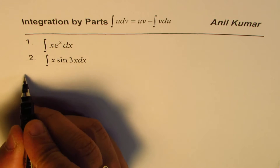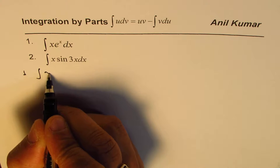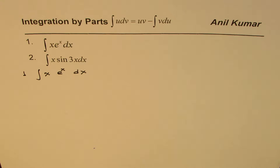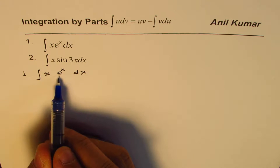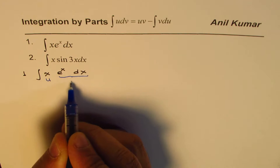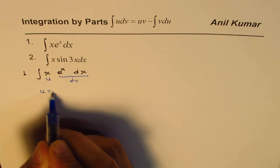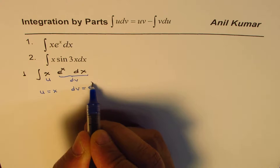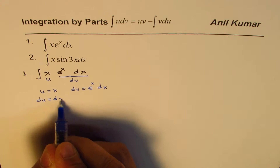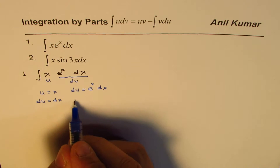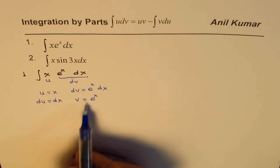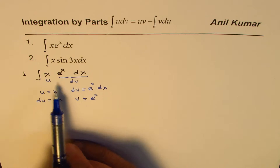Let's take the first example: we want to find the integral of x·eˣ dx. I will take one of my functions as u — I'm taking x as u. This portion eˣ dx I'll take as dv. So u equals x and dv equals eˣ dx. If I differentiate u, I get du equals dx. If I integrate dv, I get v equals eˣ, since the integral of eˣ is eˣ.